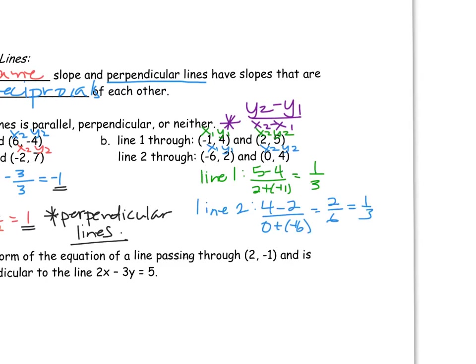For both lines 1 and 2, I got a slope of positive 1 third. Those are the same slope, and that would mean these lines are parallel. We found that answer by calculating their slope.